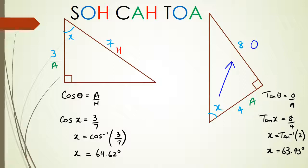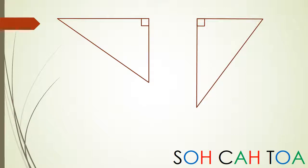For the next two examples I'd like you to try them yourselves. Pause the video and try it, then check your answers by following the video. Here are the two triangles: the first has sides 5 and 3, the second has sides 5 and 4. Pause the video here and see if you can work out the answers, then come back and check.